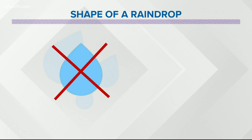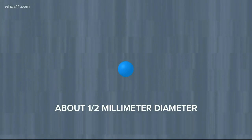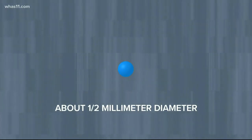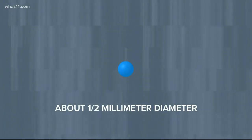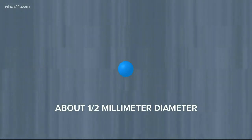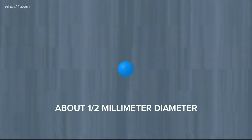The answer is no. When raindrops initially form, they're spherical and very small with a diameter as little as a half millimeter. That's because water molecules that make up the tiny raindrop have very strong bonds between each other, and that is called surface tension.